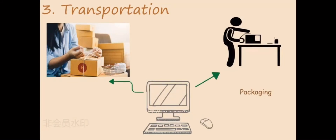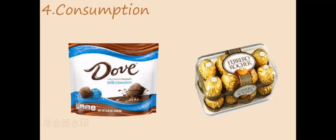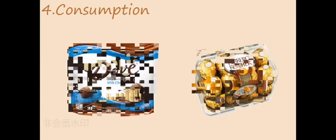What comes next is consumption. Cocoa was introduced to Europe by the Spanish in the 16th century. When the dried cocoa powder was mixed with sugar and water, it opened up cocoa's boom. And here came a lot of chocolate brands like Dove, Rocher, Meiji, Le Conte, and others.